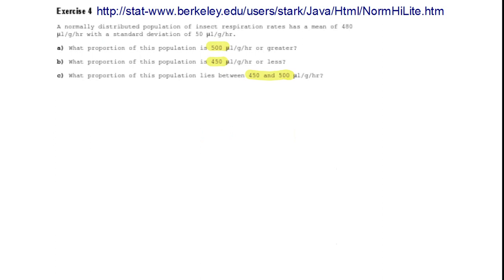First thing we need to do is specify the situation we're working with. What we have is a situation where the mean is 480 and the standard deviation is 50 in the population itself.